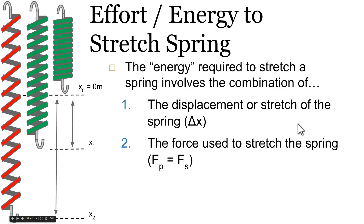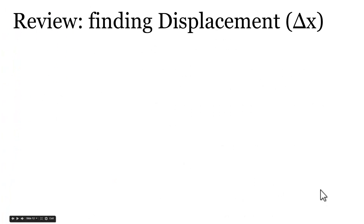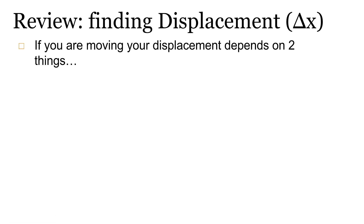So if we want to represent this quantitatively, we need to somehow represent the combination of force and stretch together. That leads us to the question: how do we represent the combination of any two values in general? Let's go back and talk about how we found displacement of a moving object, because that also involved the combination of two different things.